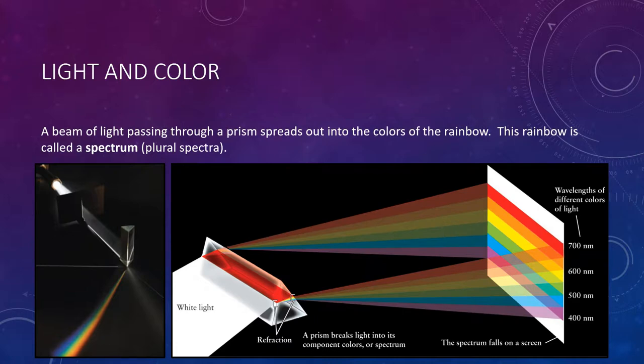You can produce a spectrum with either a prism or a diffraction grating, which is a piece of plastic or glass etched with many closely spaced lines. If you have a DVD handy, you can make a spectrum for yourself. The bottom of a DVD is etched with many closely spaced circles and therefore acts like a diffraction grating. This is why you see rainbows of color on the bottom of the disc when you hold it up to light.